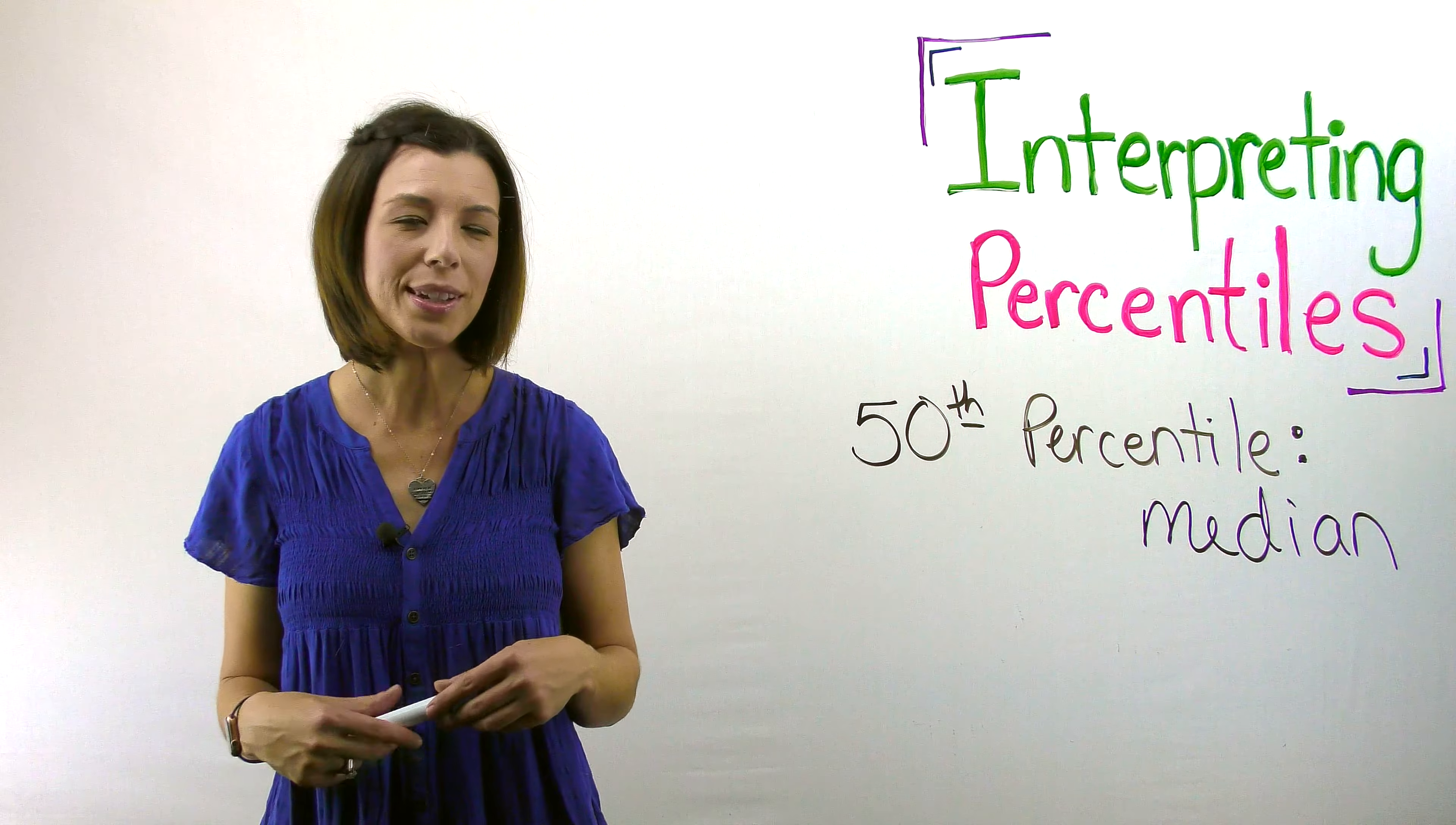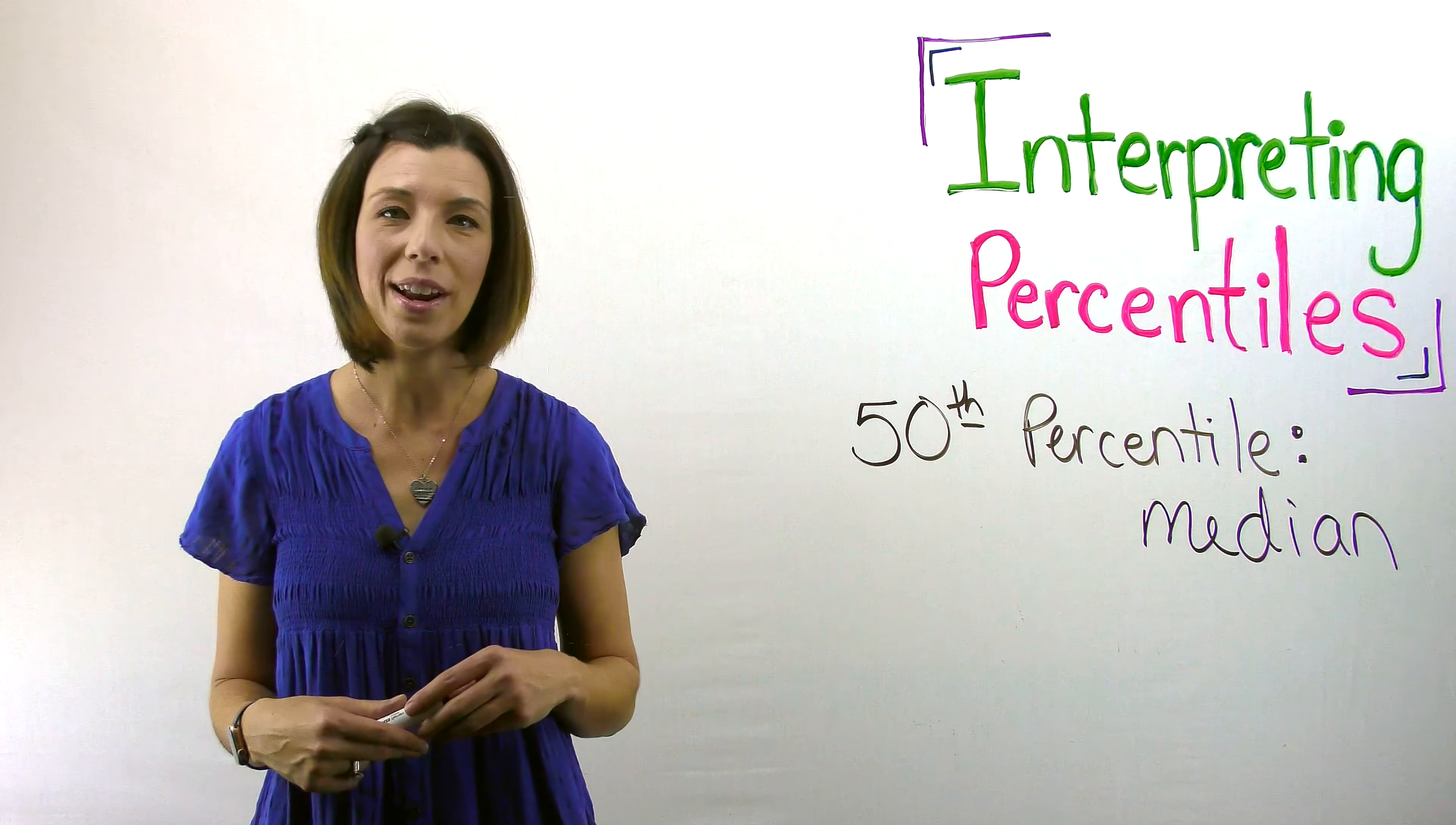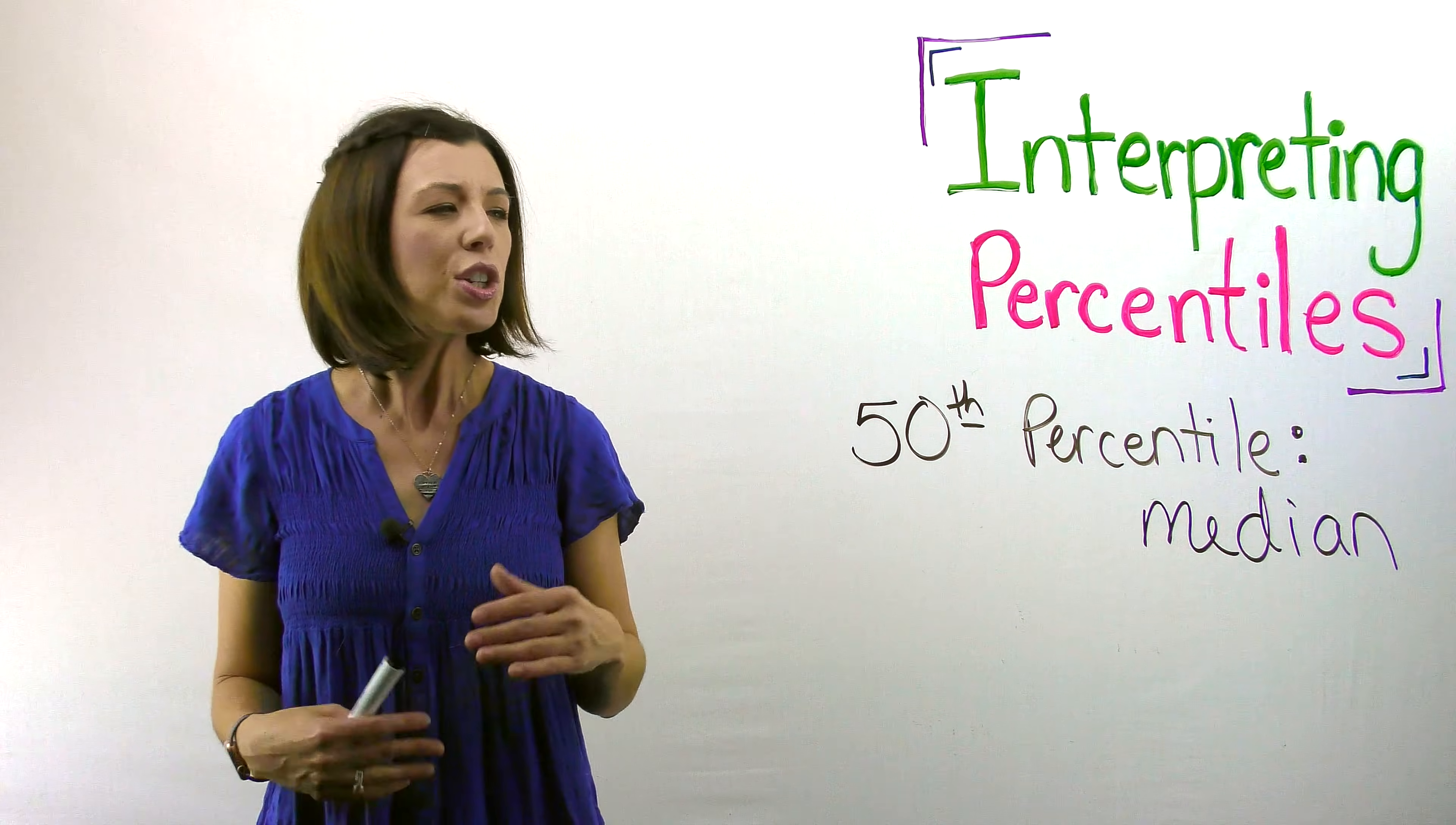Can you think about the 25th percentile? What would that be? Again, thinking back to box and whisker plots. Hopefully, you said the lower quartile or Q1. That would be our 25th percentile. How about 75th percentile? What would that be? Quartile 3, you're exactly right, or the upper quartile.